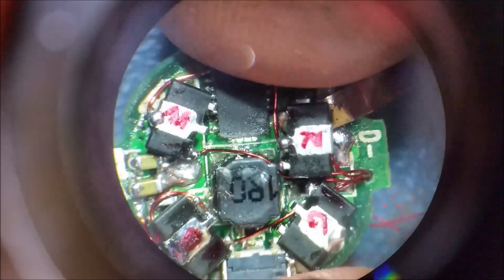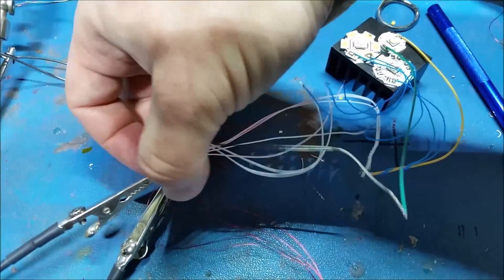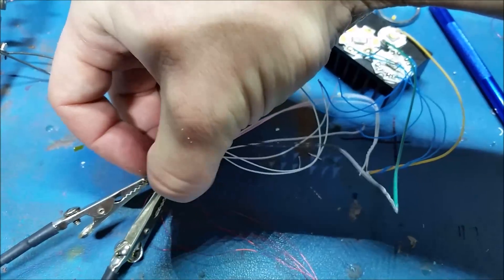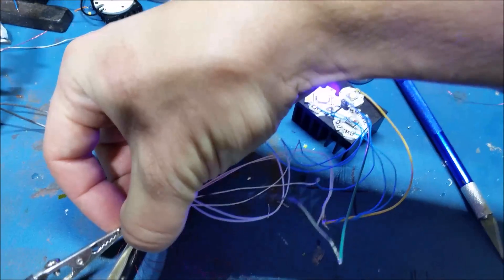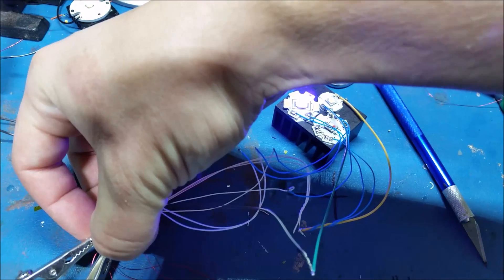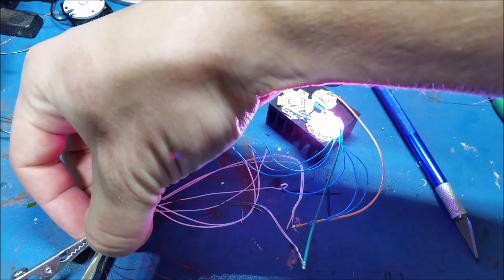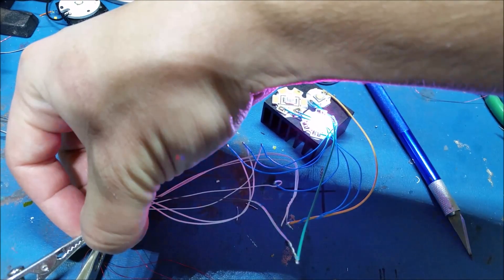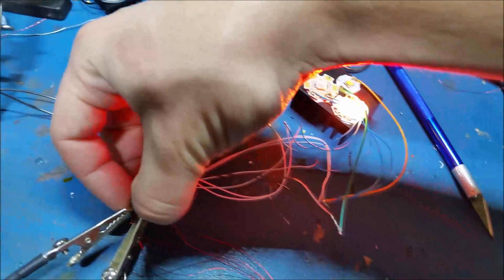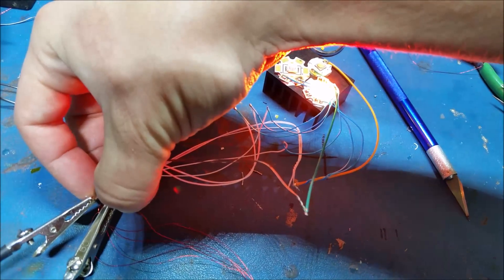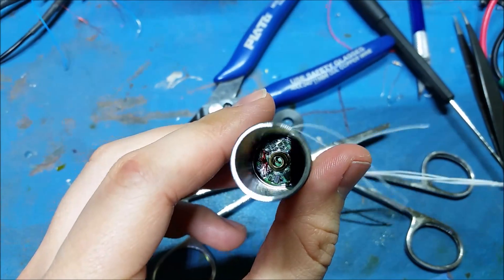And here's the first functional test. White works. UV works. Colors work. And these work on any input voltage. So the buck boost is functioning to boost for colors. Now I just got to figure out the LEDs.